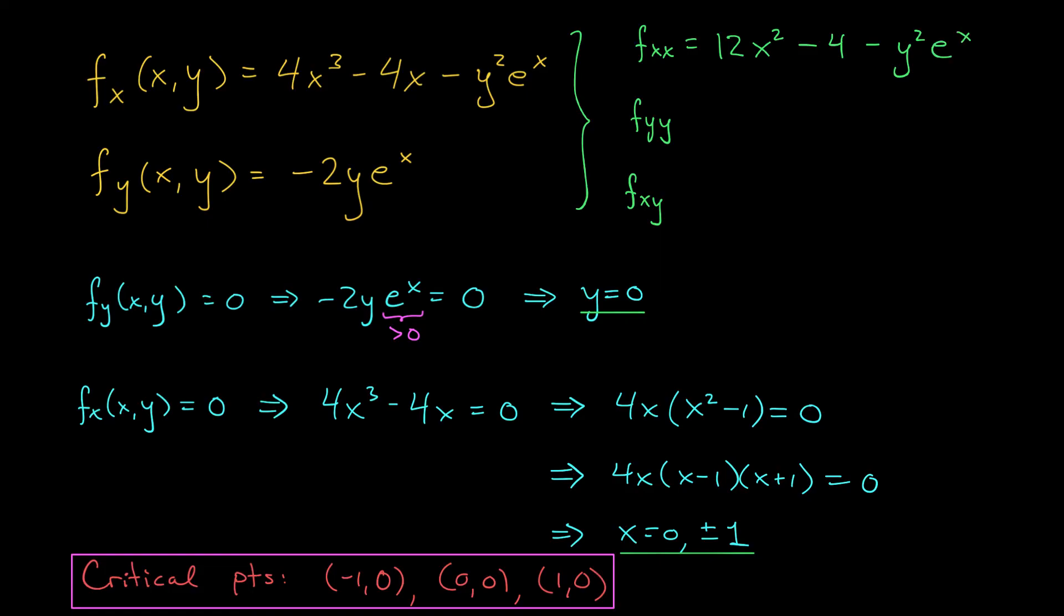To get my second partial derivative with respect to y, I differentiate fy with respect to y. That gives me minus 2 e to the x.